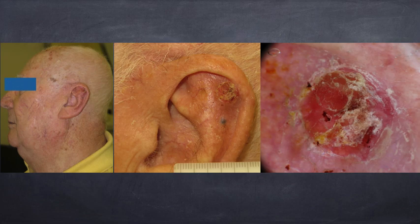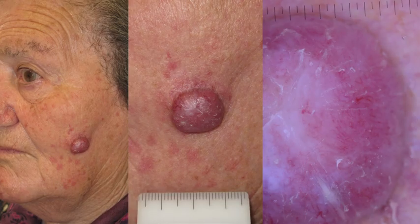Here is another example with white and yellow keratin masses apart from red structureless areas, and here a more nodular tumor in which the differential diagnosis also included Merkel cell carcinoma.